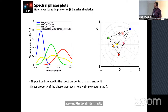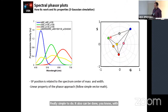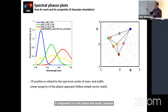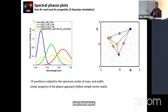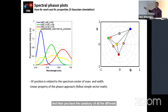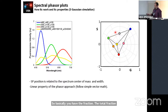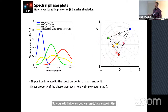This can also be done with three components in the first harmonic, because you have G and S for each fluorophore, and the sum of all fractions equals one. So you can analytically solve for three components very easily.